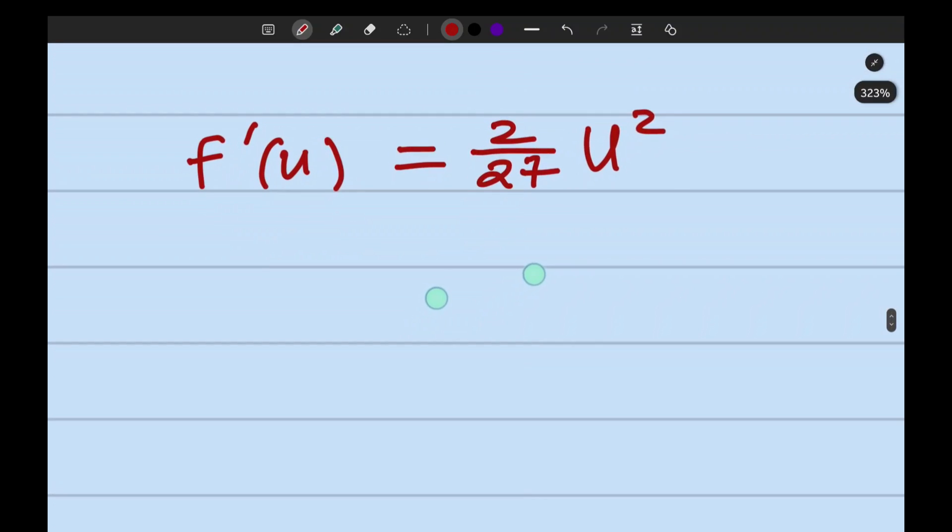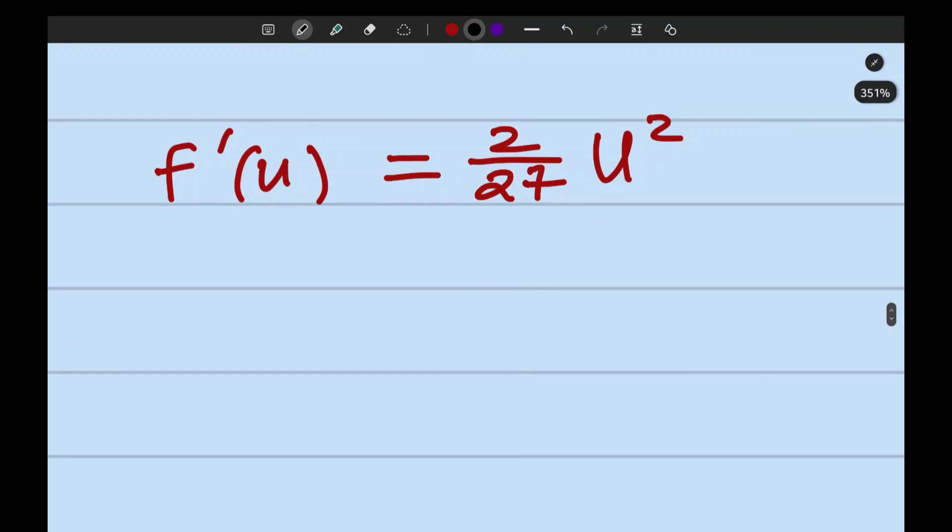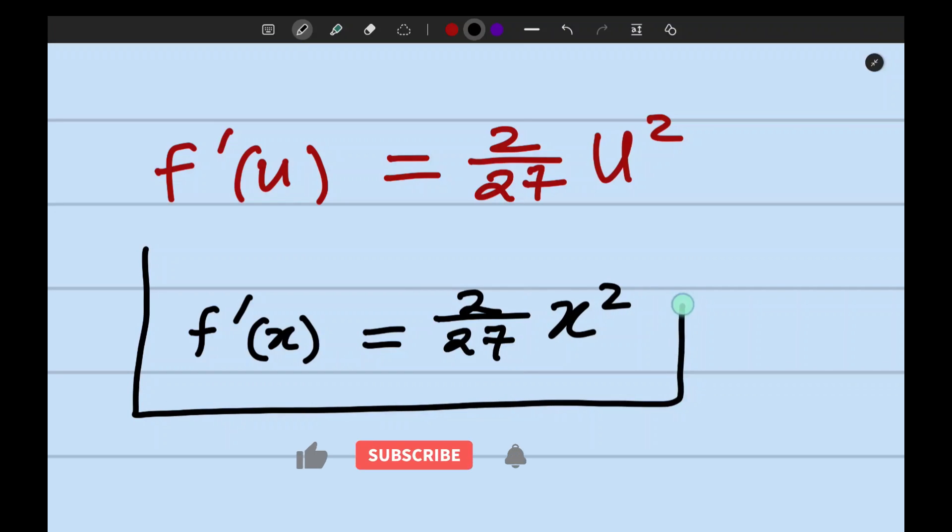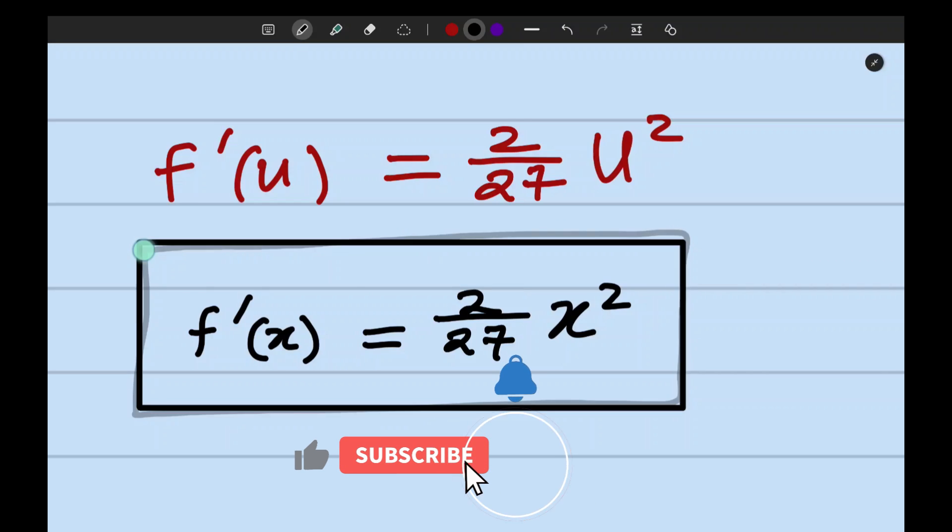Just go back and say that this was what I was looking for. I can easily change this answer and say that f prime of x is equal to 2 over 27 x squared. This is what we were looking for from the beginning.